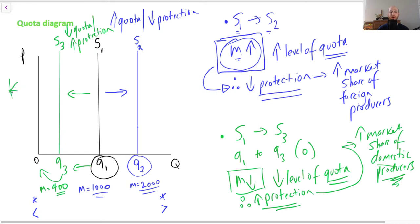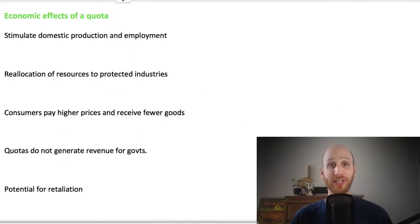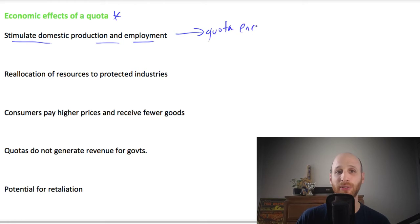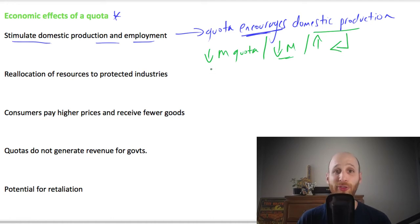Okay, so here we go. We're looking at the economic effects of a quota. A quota will stimulate domestic production and employment when the quota encourages domestic production. And when will a quota encourage domestic production?